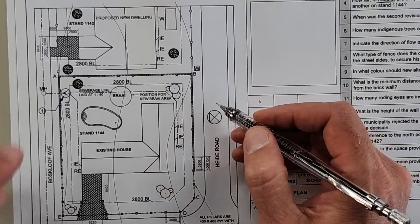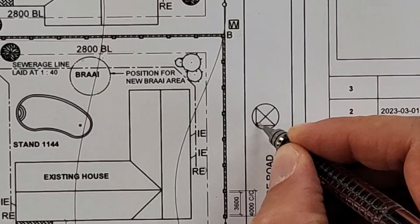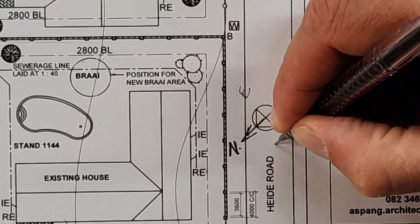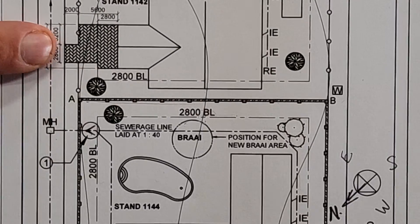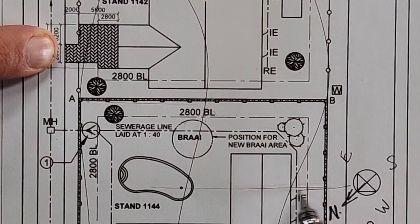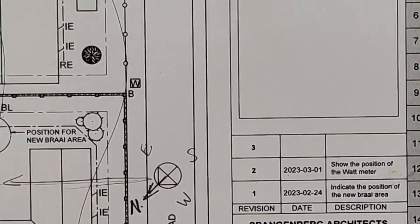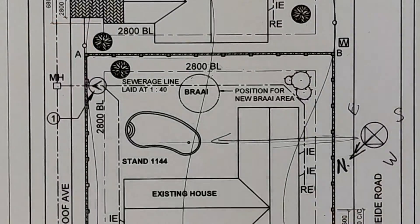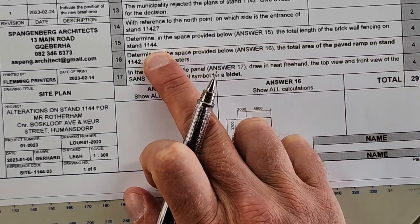With reference to the north point, on which side is the entrance of stand 1142? There's the north point and there's the entrance. Start by knowing that north is in this direction, so we've got south here, east here, and west. The entrance is in this direction — so the answer is north-east. Write your north arrow with north, south, east, west, then just look in the direction of the entrance and you'll know it's north-east.